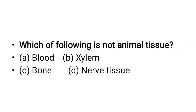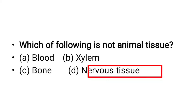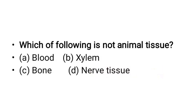MCQ: Which of the following is not an animal tissue? Options: blood, xylem, bone, or nerve tissue. Blood is an animal tissue, bone is an animal tissue, and nerve tissue is an animal tissue. But xylem is not an animal tissue — it is a plant tissue. The correct answer is xylem.